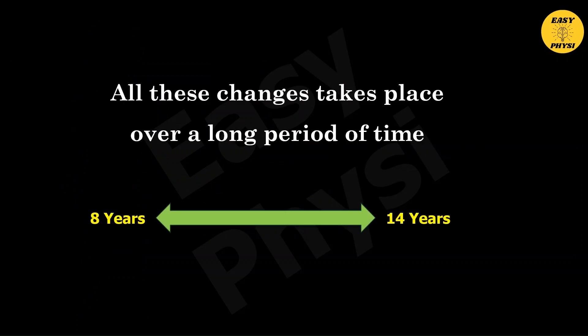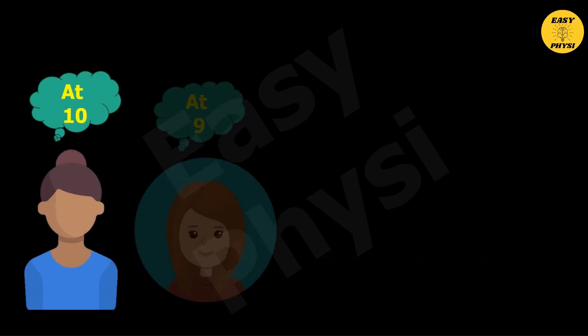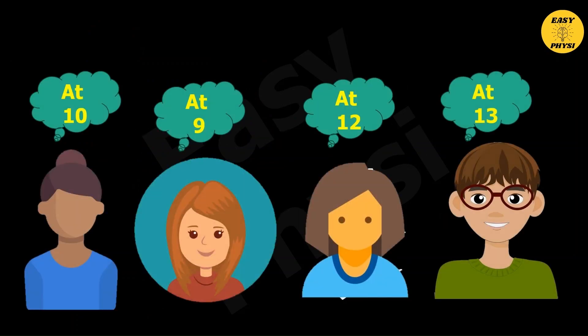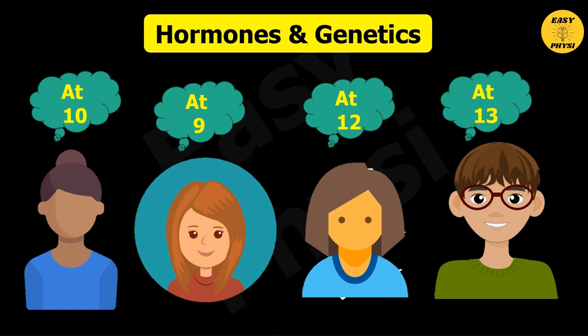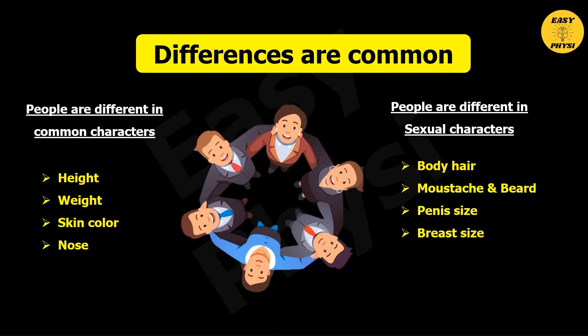These changes occur between 8 to 14 years of age. They do not happen at an exact age in all individuals — it depends on hormone levels and genetics. Just as people differ in body features like height, weight, and skin color, people also differ in sexual characteristics such as body hair, mustache and beard, penis size, and breast size.